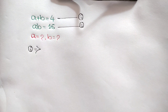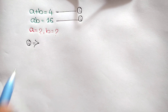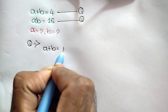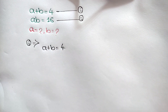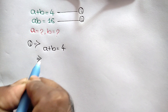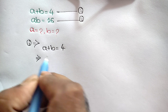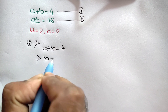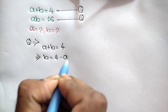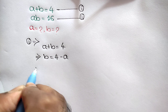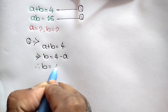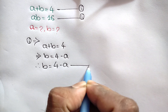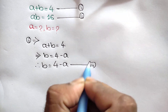From equation 1 we have a plus b is equal to 4. Taking a to the right side, we get b is equal to 4 minus a. Let's call this equation number 3.